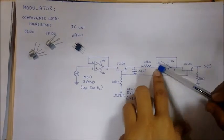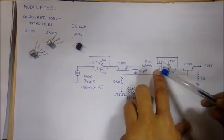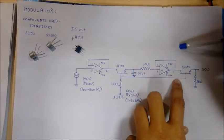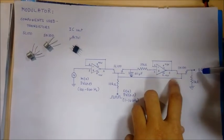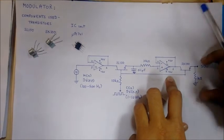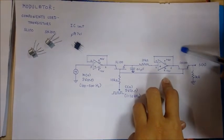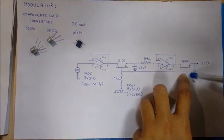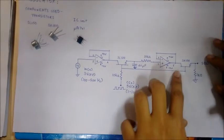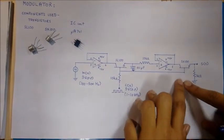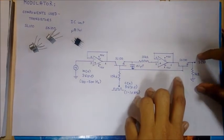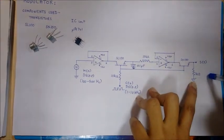The waveform is inputted at pin 3 of the next IC, which again acts as a buffer. Finally, we will get our flat-top samples at the output. This is the chopper section of the circuit, which comprises the SK100 transistor. This part of the circuit will help us even out the amplitudes and give us our flat-top sample output at the load resistor of 1 kilo ohm.